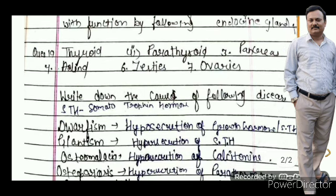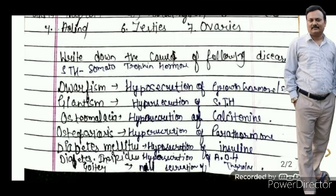Next: write down the causes of the following endocrinal diseases. Number one: dwarfism — what we call bonepan — is caused by hyposecretion of STH (growth hormone). Giantism is caused by hypersecretion of STH — when the growth hormone secretes in excess, giantism occurs.